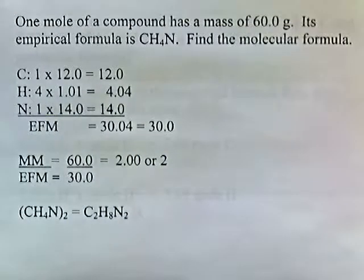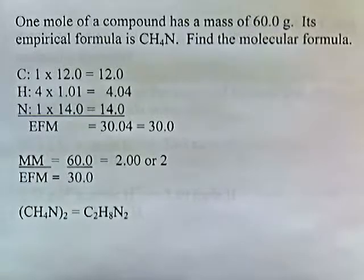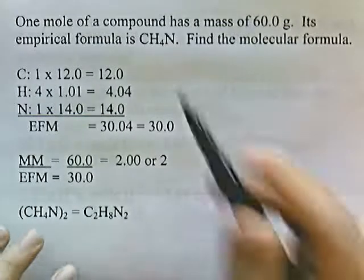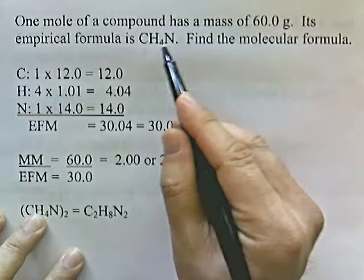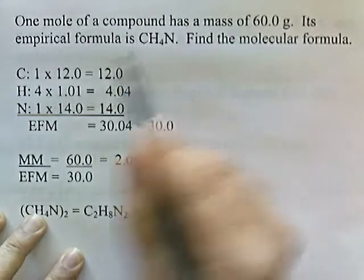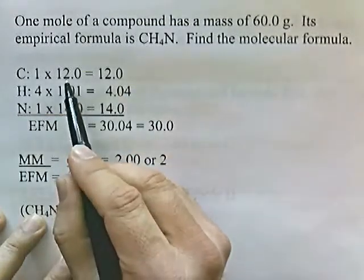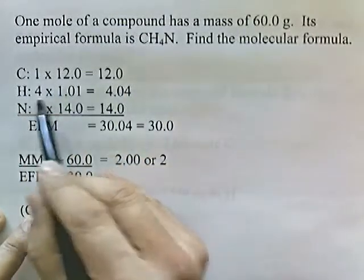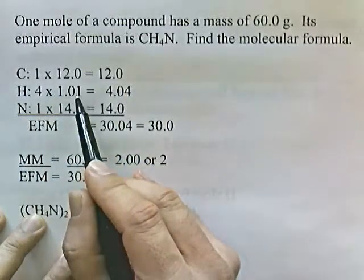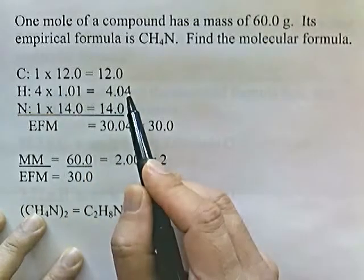Let's work through an example. One mole of a compound has a mass of 60 grams. Its empirical formula is CH4N. Find the molecular formula. We start by finding the empirical formula mass. From the empirical formula: one carbon is 12, four hydrogens times the molar mass of hydrogen gives 4.04.